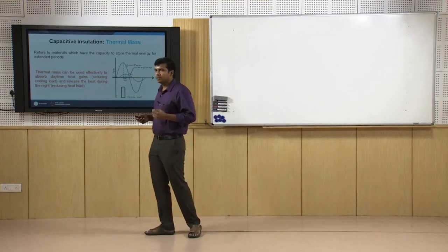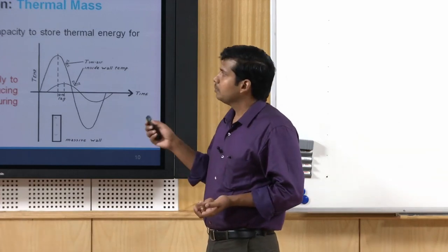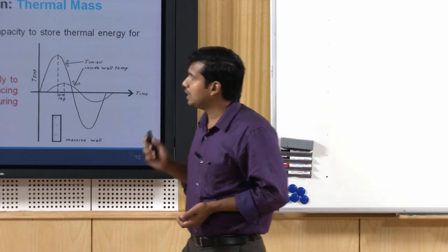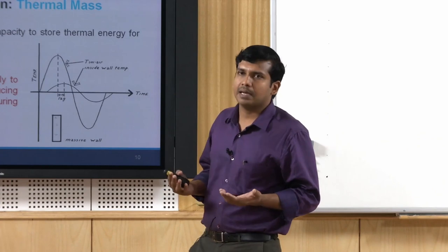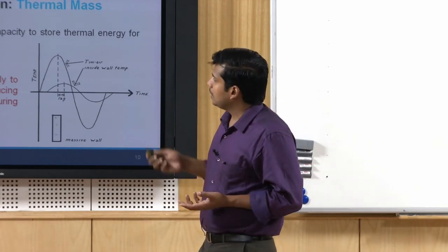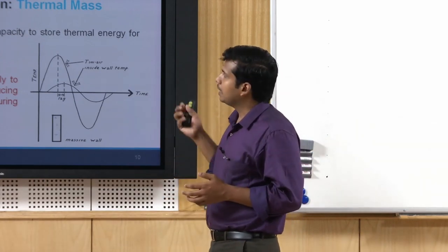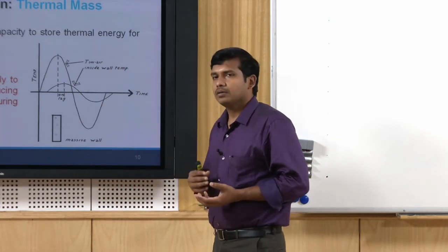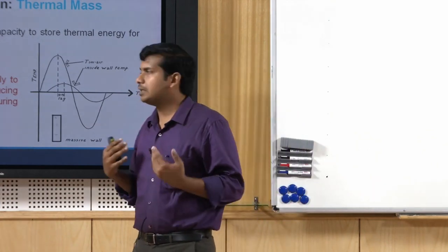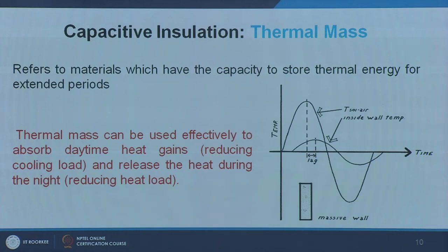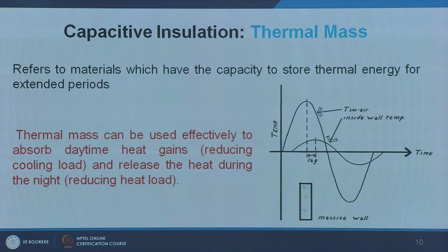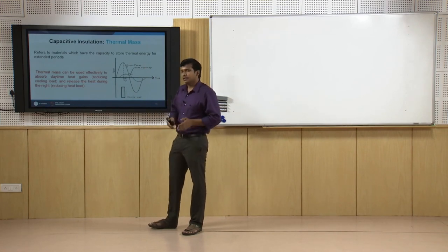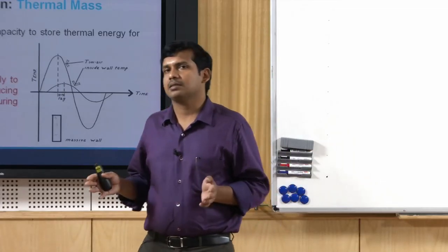Now let us take a closer look at capacitive insulation. We have been traditionally using this type of insulation very commonly. Most of our old buildings — palaces and residential spaces — had adobe walls, thick granite slabs, with high thermal capacity. Thermal capacity refers to the ability of a material to store thermal energy for an extended period and then release it back outside. As a consequence, it can absorb a lot of daytime heat — due to temperature as well as solar radiation — and release it during nighttime to the ambient rather than passing it inside. This is by virtue of the material's density, specific heat capacity, and thickness.